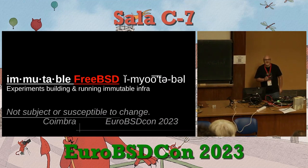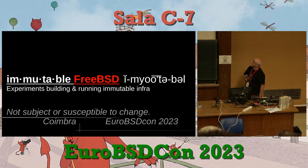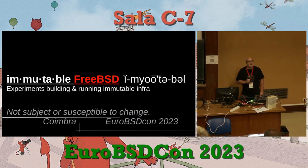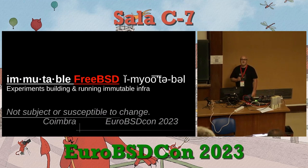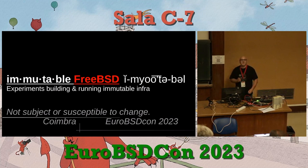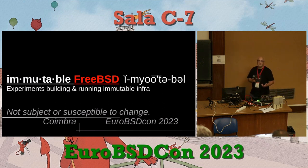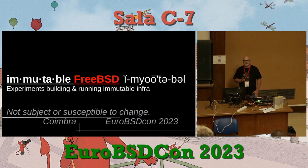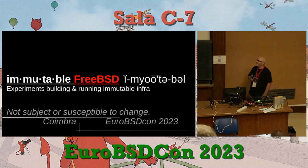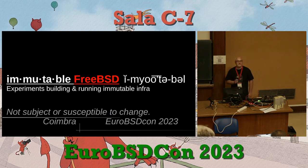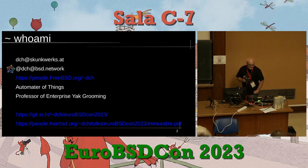Welcome — this is the last session of the day, thank you for making it through to the bitter end. This is a talk about immutable FreeBSD, and I think all of us have dealt with enough operating systems to know that this is a lie — it's a goal, it's aspirational, it's not fully achievable. But we made some progress. Immutable means not subject to or susceptible to change.